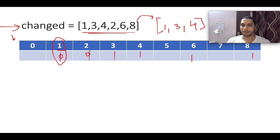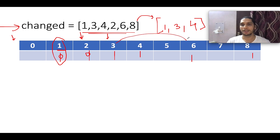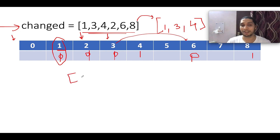Proceeding ahead, the next element is 2 — its frequency is zero, so we skip it. The next element is 3, with frequency 1. Since it's greater than zero, I double it to get 6 and check its frequency — it's 1. I reduce both frequencies by one so both become zero. So far we've identified 1 and 3 as part of the original array.